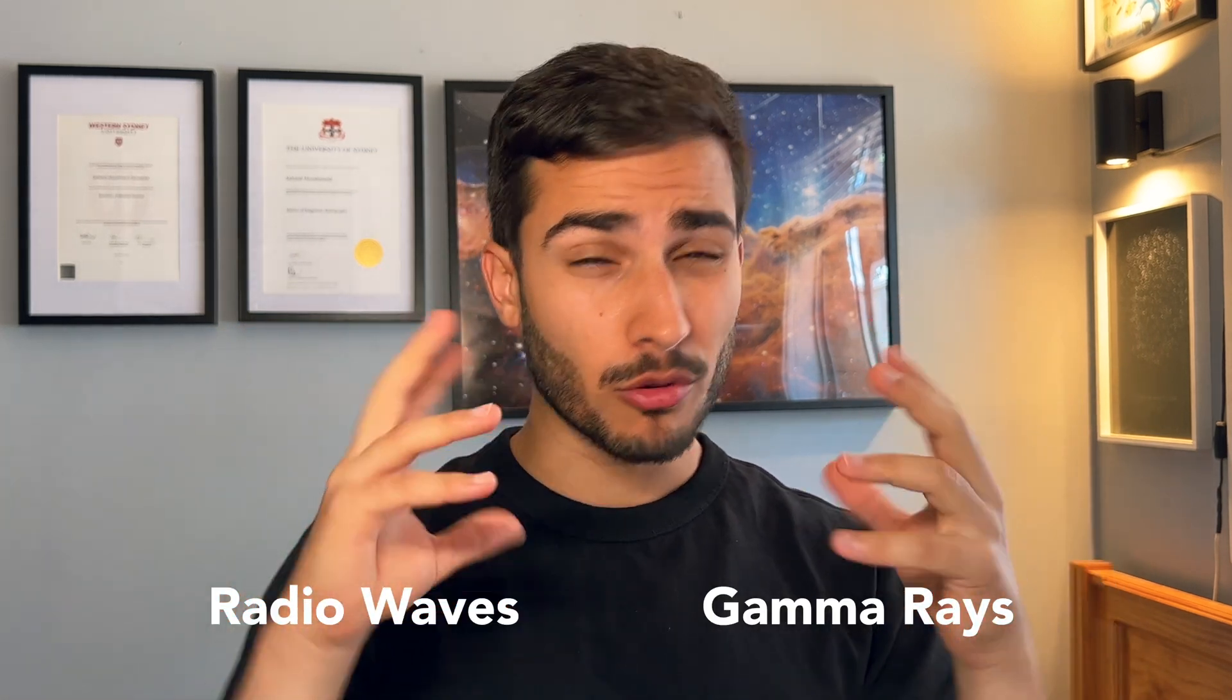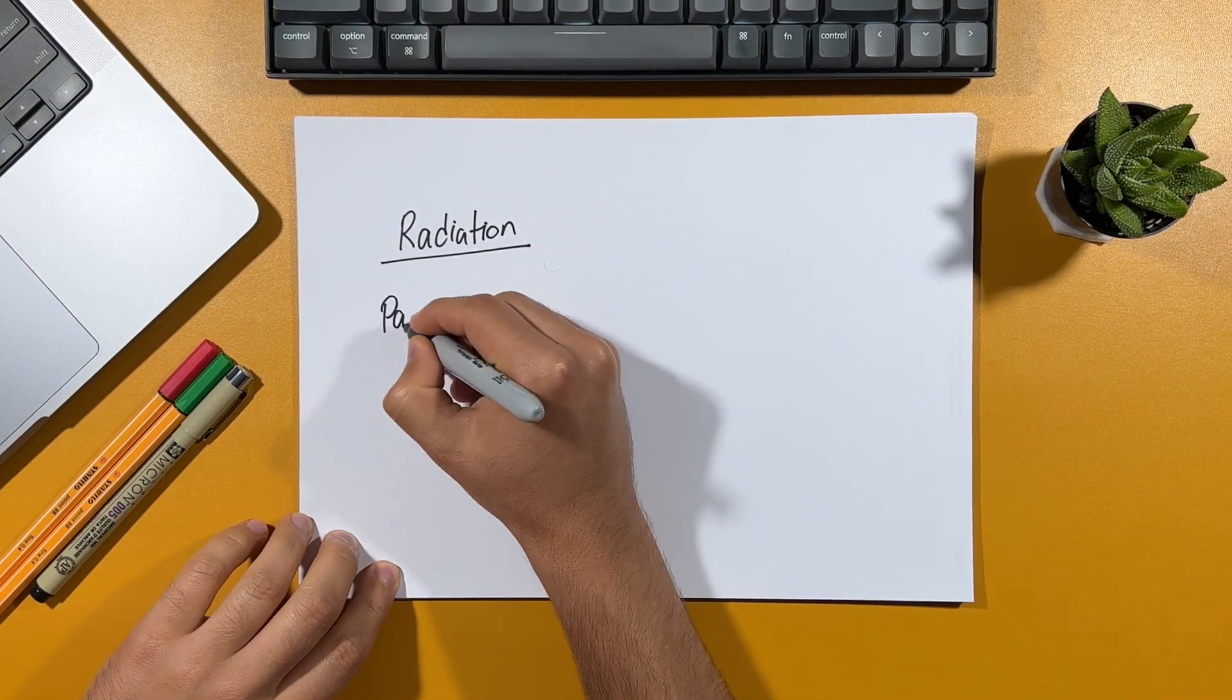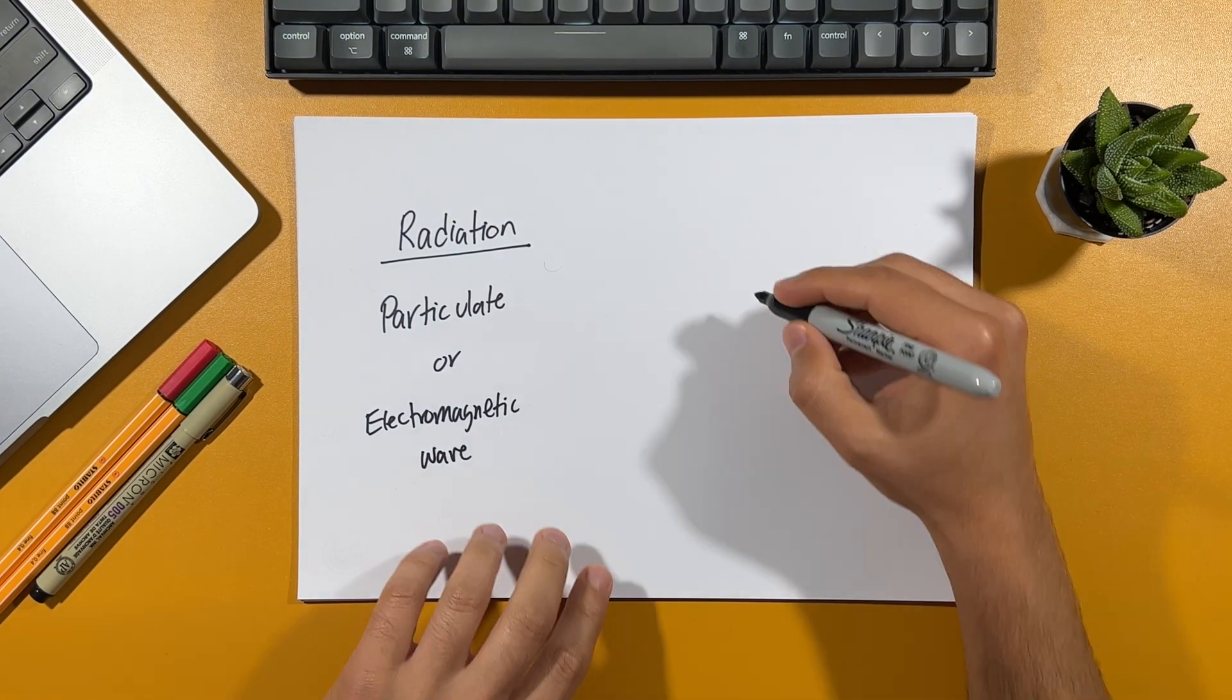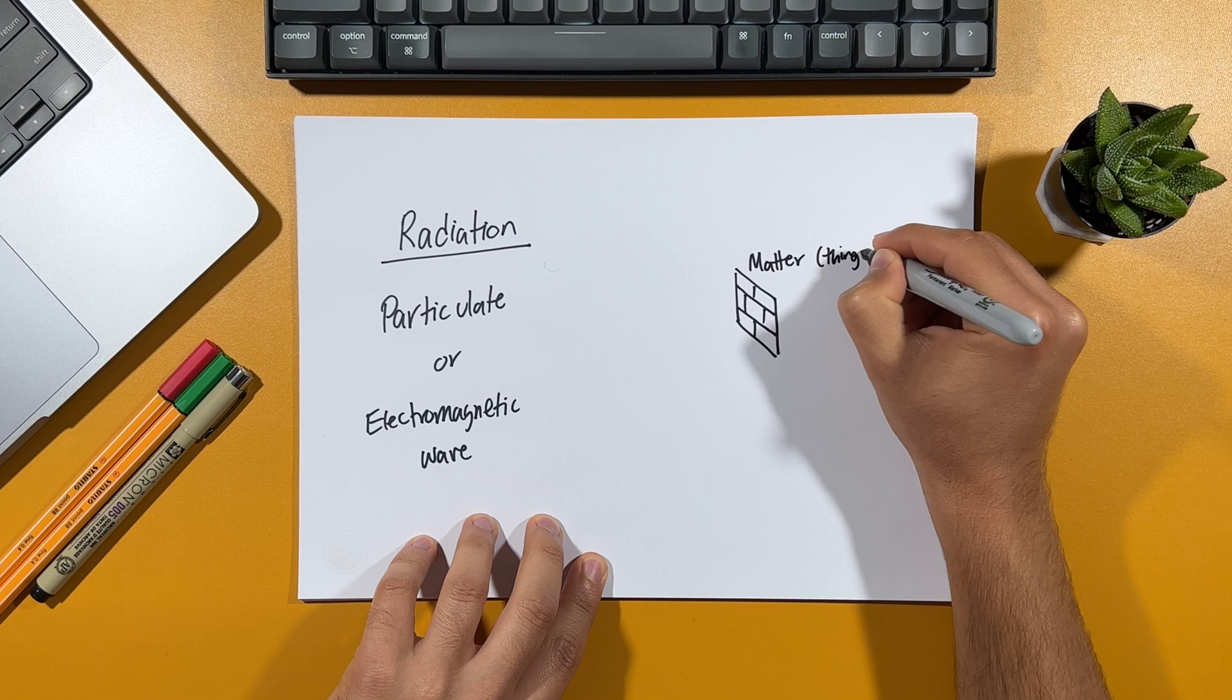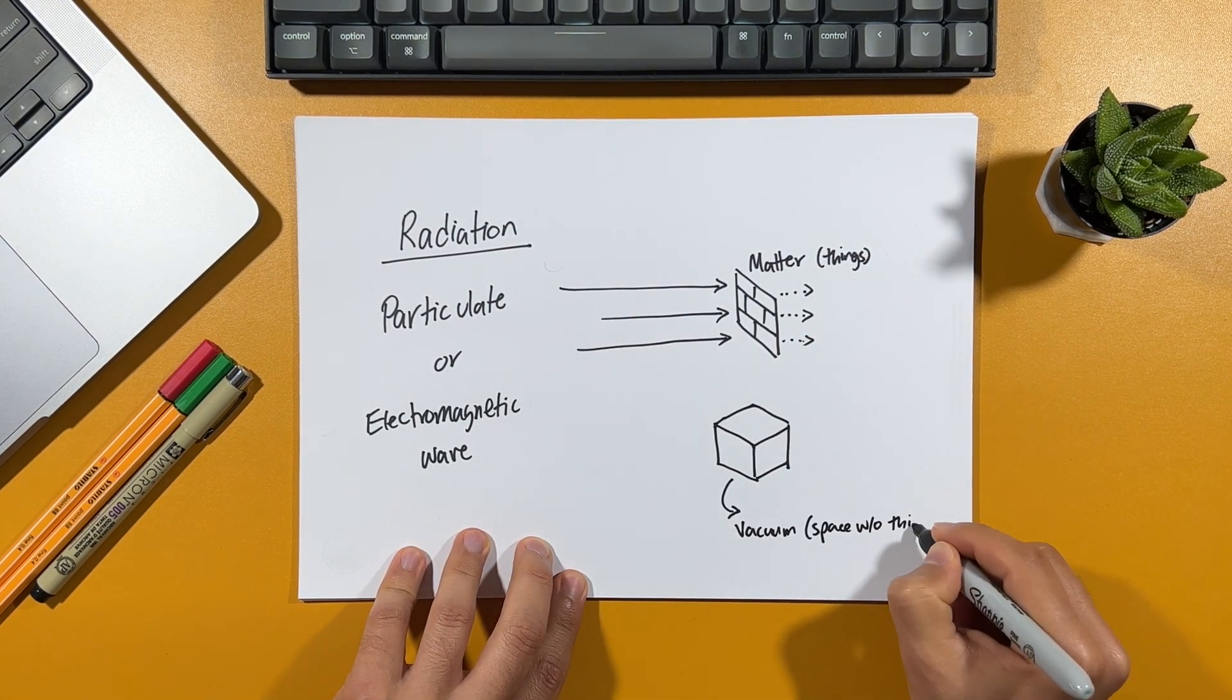Radiation, although a scary word, is all around us in more ways than you know. From low energy radio waves to super high energy gamma rays, each having their own properties and being useful for different applications. Radiation itself is simply particles or waves of energy that have the ability to pass through matter, which are just things, or a vacuum, which is space without things. In order for us to really understand the unique properties that x-rays possess, which is what's made medical imaging a possibility, it's worth exploring the other types of radiation first.